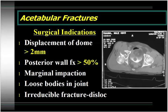The surgical indications include incongruency of the femoral head relative to the weight-bearing dome of the acetabulum with the patient out of traction, displacement of the dome greater than 2 millimeters, posterior wall fractures greater than 50% — which are typically unstable — marginal impaction, loose bodies in the joint that need to be removed, or an irreducible fracture dislocation where you have multiple fragments in the joint, which would be an indication for relatively early surgical intervention.